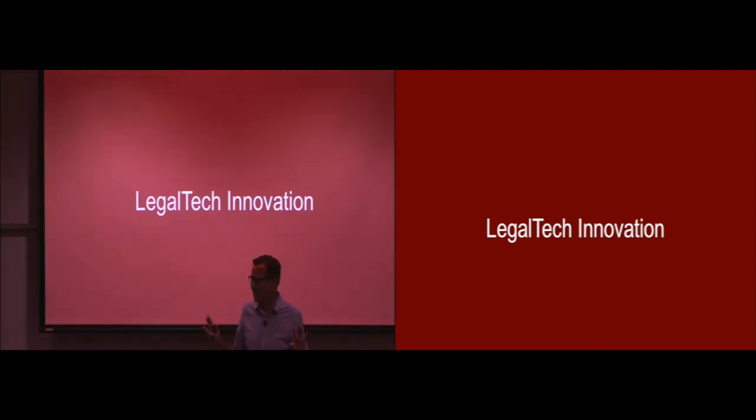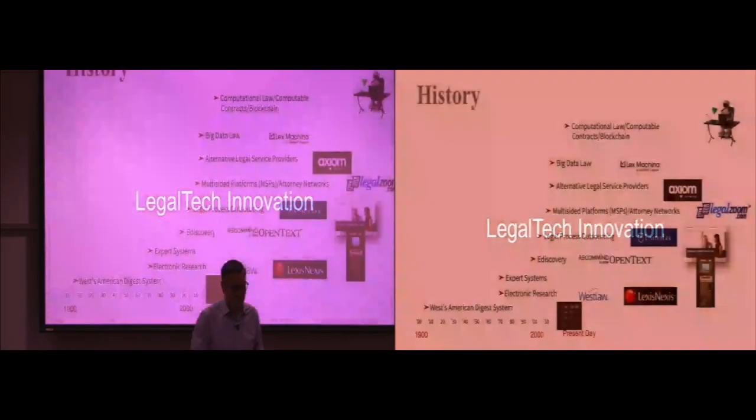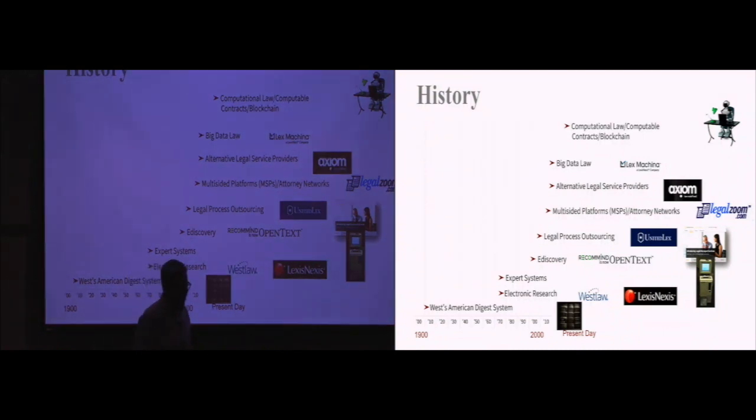This is my very simplified history of important technological innovations in legal technology. I like to start with West's American Digest system, which was invented around 1900. We could go even further back into the past to the Codex Hammurabi, which was a profound technical innovation of profound importance in basically memorizing the law. But in more recent history, I would start with West's American Digest system as an invention that allowed us to access the case law in a more organized way.